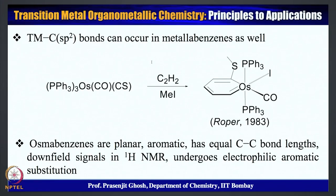Overall, Transition Metal aryl complexes are somewhat more stable than Transition Metal sigma alkyl complexes. Today we are going to see another very interesting application of Transition Metal aryl complexes with regard to the formation of metallobenzene. Metallobenzenes are an important class of molecules in which the metal itself is part of the benzene framework.